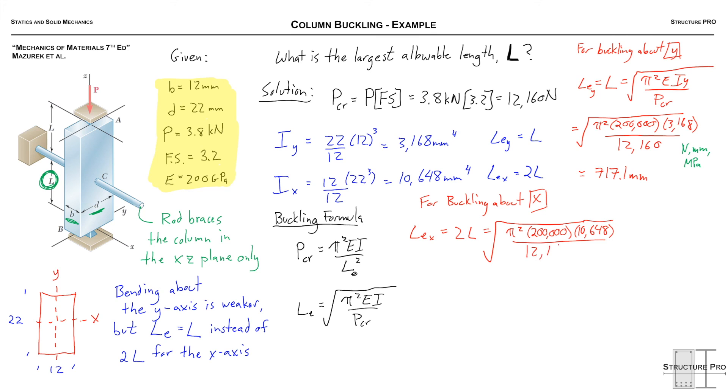Square root of pi squared 200,000, 10,648 all divided by 12,160 that gives 1,314.7 millimeters but we have to divide that by 2 and our final L is 657 millimeters.